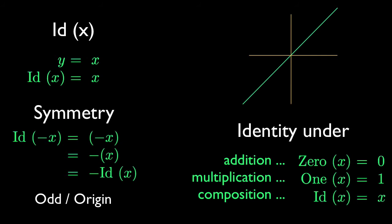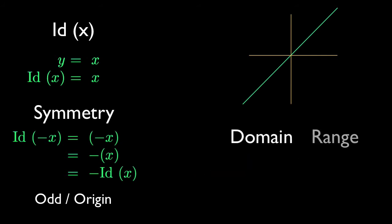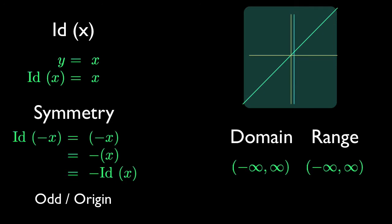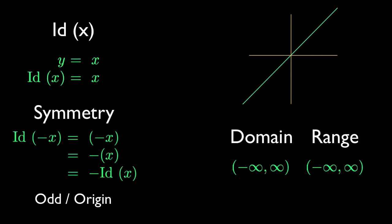Compose it with a function and the function remains identical. We'll look at composition in much more detail in another video. For now, just remember that the id function is relative to function composition. Every function has an explicit domain and range. The id function is a polynomial, and like all polynomials, its domain is all the real numbers between negative infinity and positive infinity. Like all odd degree polynomials, its range is also all the real numbers. The graph of an inverse function is always its reflection across this line. Because the id function is its own reflection across itself, it is one of the rare functions that is its own inverse.